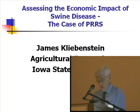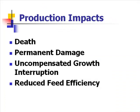So I think it's quite interesting what Scott is doing and the implications that's going to have on the industry. We'll spend a little bit of time on production impacts first, then get to the economics and some of the dollar signs. Just taking a look at economics of animal health, and then we'll apply it to PRRS. Looking at production efficiency and things that affect the economics: death, damage — it can be permanent, it may not be permanent, it may be uncompensated growth interruption.